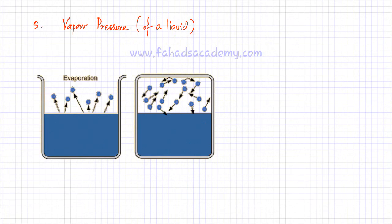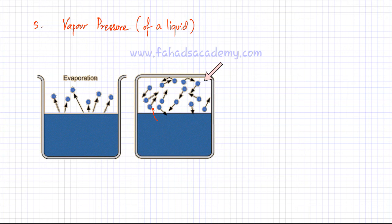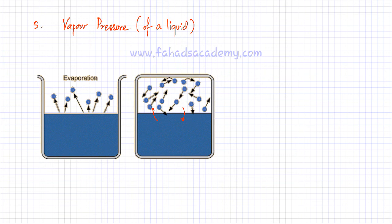Another property dependent on intermolecular forces is vapor pressure. Normally, liquid particles evaporate when they gain enough energy to overcome intermolecular forces. In a sealed container, evaporating particles cannot escape and may lose energy and condense back to liquid. An equilibrium is reached where the rate of evaporation equals the rate of condensation, resulting in a constant vapor pressure from particles in the gaseous state.